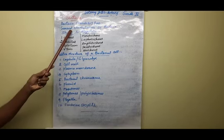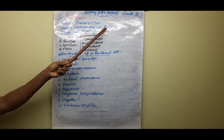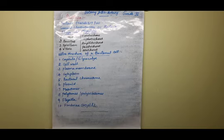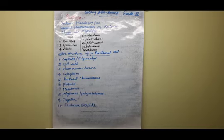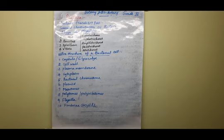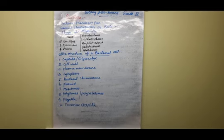Next we are going to learn about the general characteristic features of bacteria. The bacterial cell is one of the prokaryotic organisms. Prokaryotic organisms means there is no nuclear membrane and no membrane-bound organelles. That is what we call a prokaryotic organism.